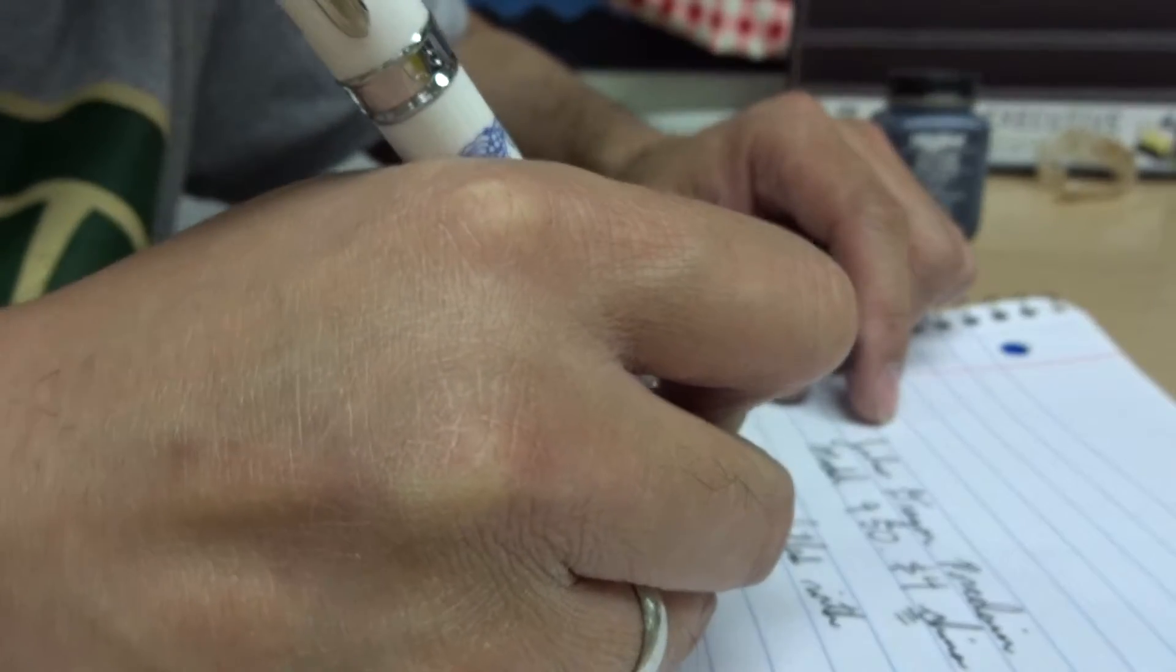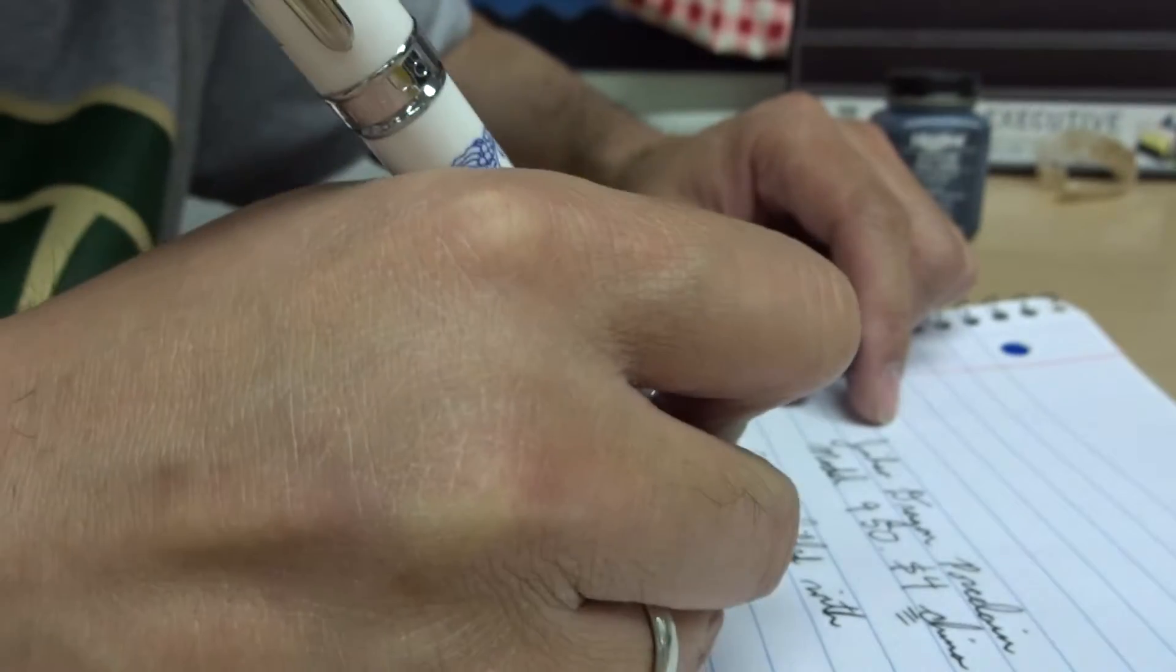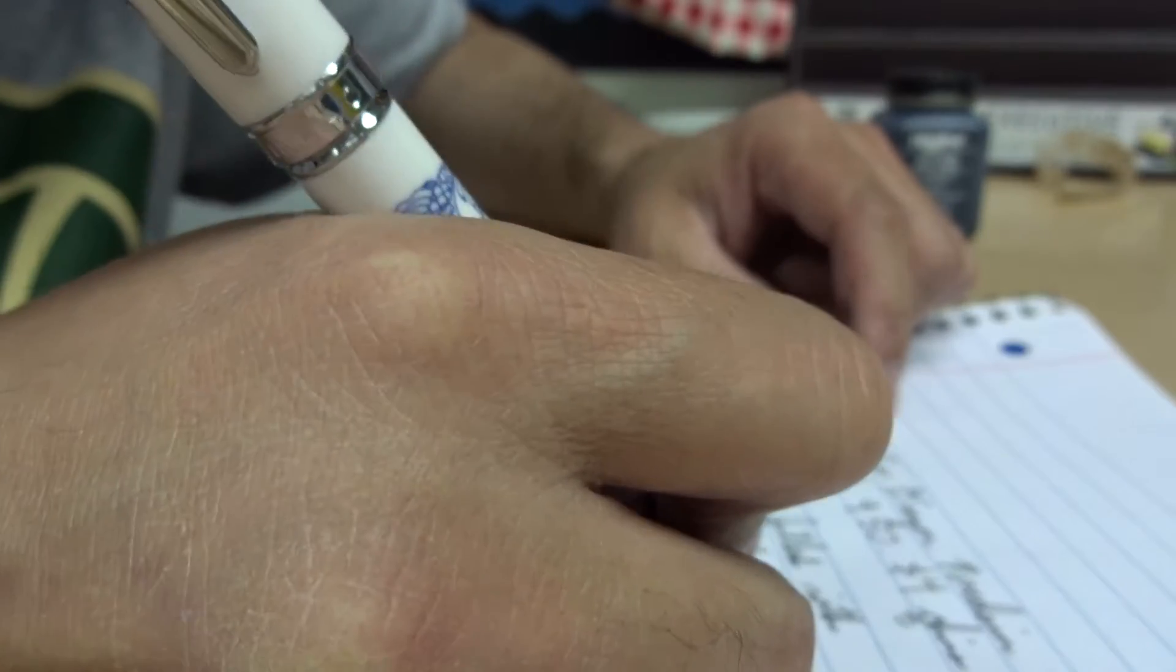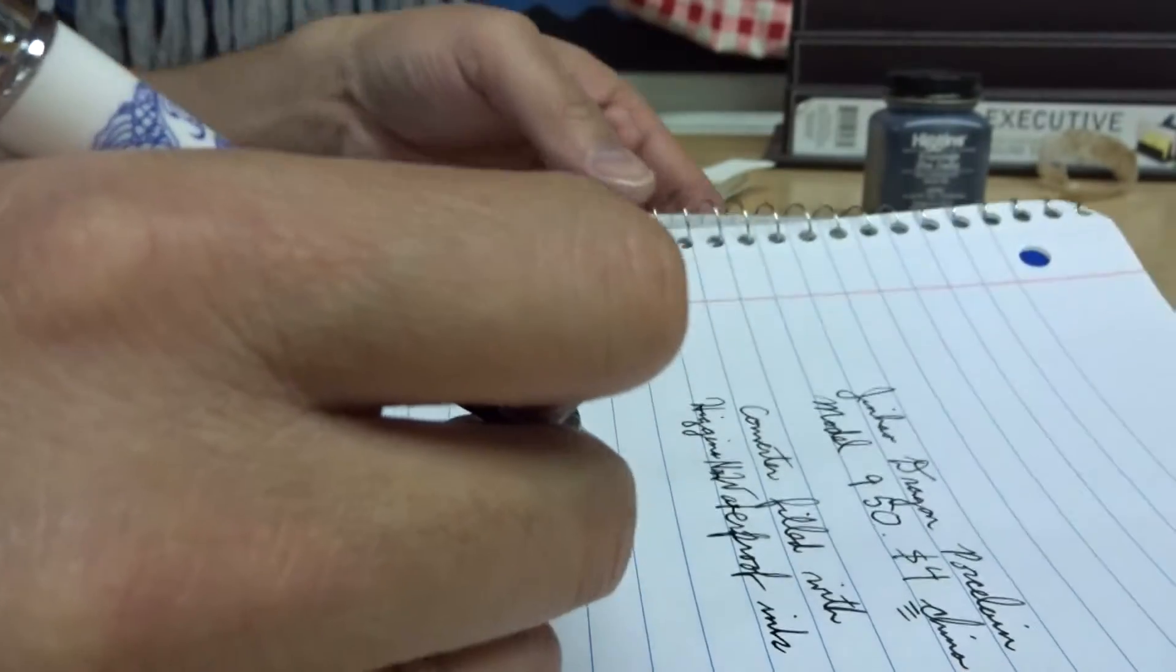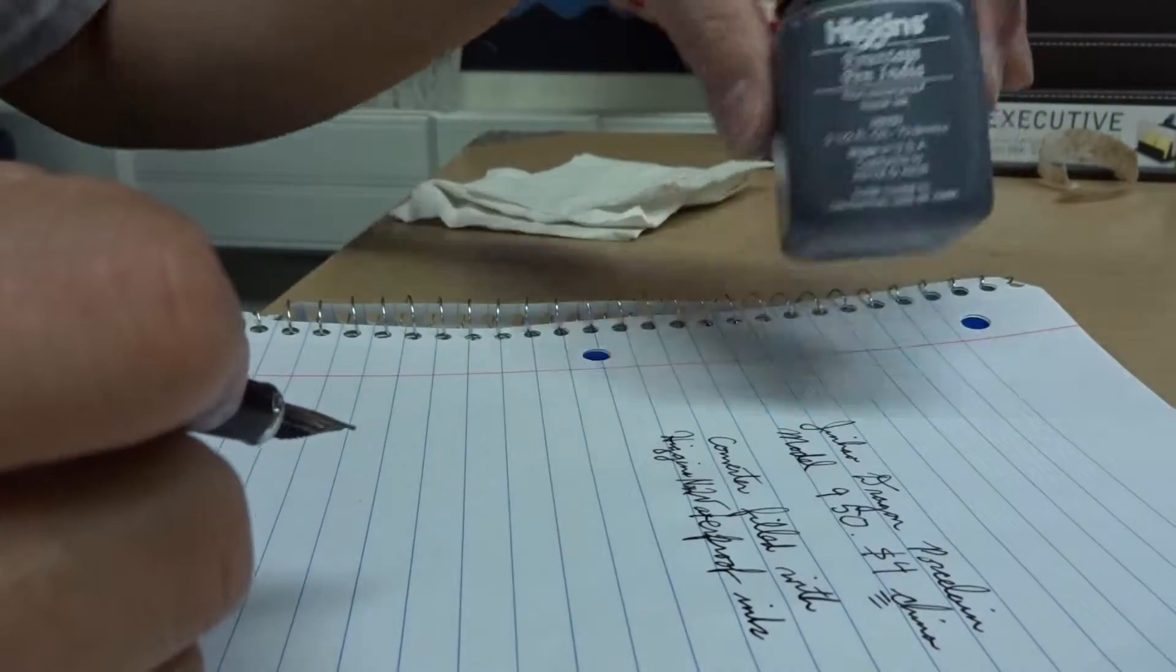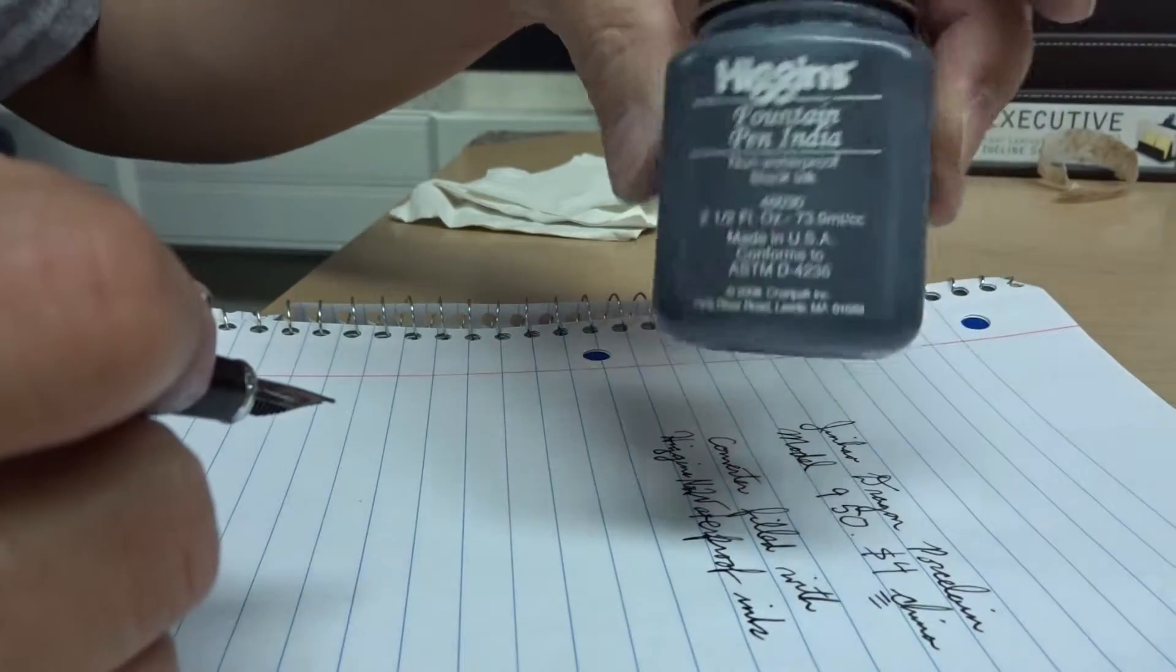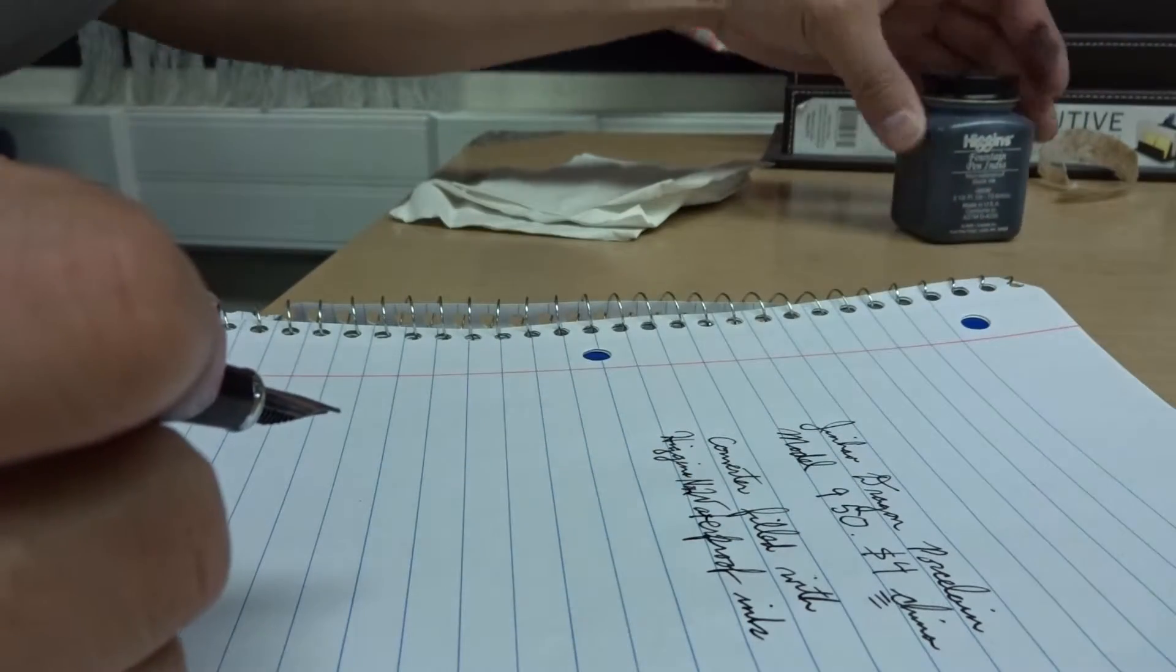Higgins non-waterproof ink that I got from Michael's craft store for about $4 for the bottle. And that $4 will fill, I don't even know, maybe $20 worth. I have never emptied a Higgins container before.